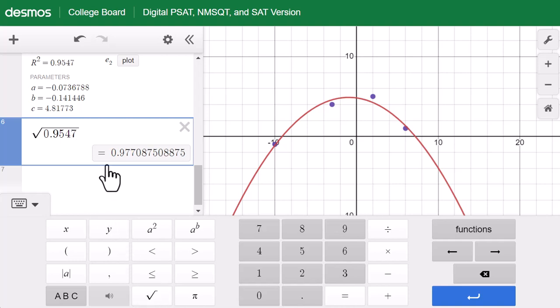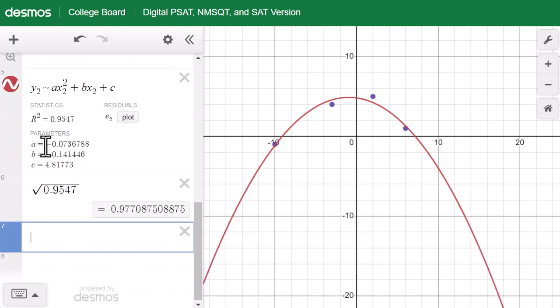So r equals 0.97708 and so on. So the quadratic regression function is y equals negative 0.074x square minus 0.14x plus 4.81. We round a, b, c to the hundredth.